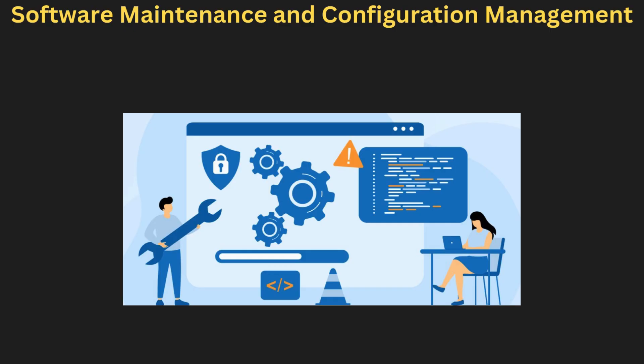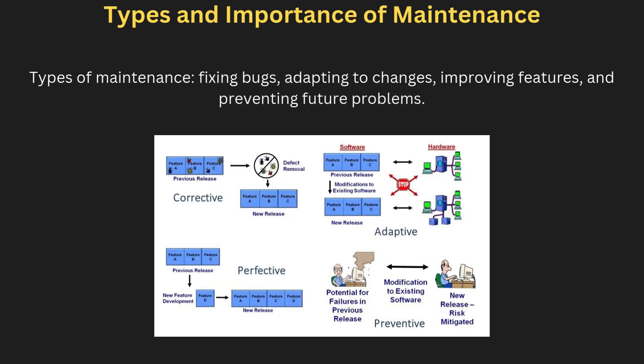Hello guys, welcome to Unit 6 of Software Engineering. In this unit we will explore two crucial areas: software maintenance and software configuration management. Maintenance helps ensure that deployed software continues to work smoothly and can adapt to new changes, while configuration management keeps track of changes throughout the software's lifecycle. Understanding these processes is vital for managing and evolving software products effectively. Let's dive into these topics in more detail.